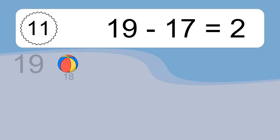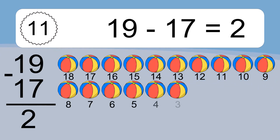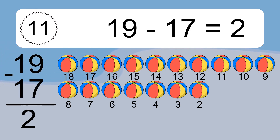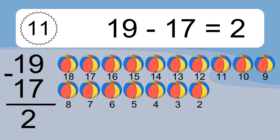19 minus 17 equals 2. Let's count it: 18, 17, 16, 15, 14, 13, 12, 11, 10, 9, 8, 7, 6, 5, 4, 3.